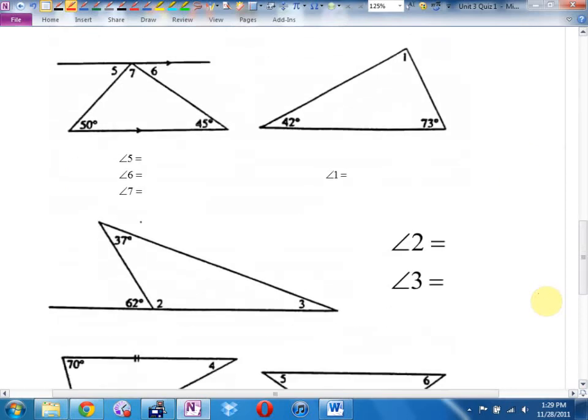Back page. Now it gets a little tougher. Angle 5, 50 degrees. Angle 6, 45 degrees. Angle 7. Whatever. 180 minus 50 is 130 minus 45. 85?